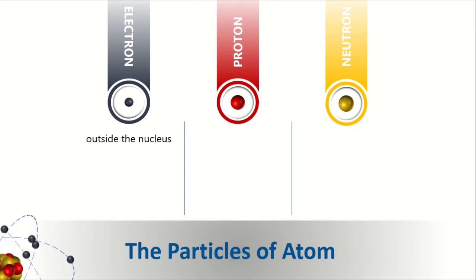Electrons reside outside the nucleus, revolving around it in specific orbitals. While protons and neutrons are at the center of the atom called nucleus.